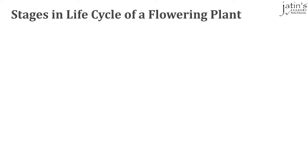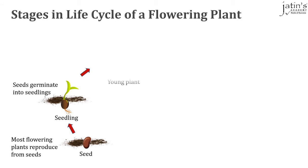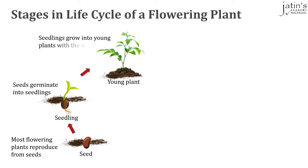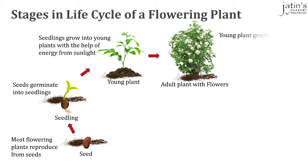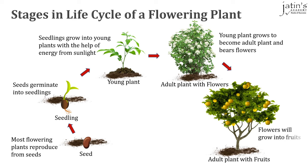Let's jump into the stages in the life cycle of a flowering plant. It all starts with a small tiny seed. Most flowering plants reproduce from seeds. A seed will grow up into a seedling, which will then grow into a young plant with the help of energy from sunlight. A young plant will grow on to become an adult plant which will then bear flowers. Flowers will then turn into fruits, which in turn will contain seeds, and the life cycle continues.